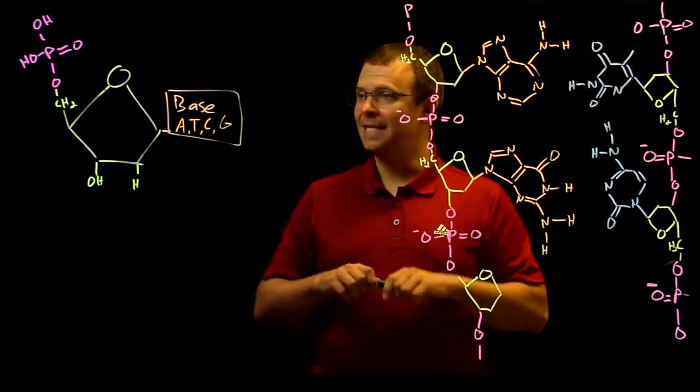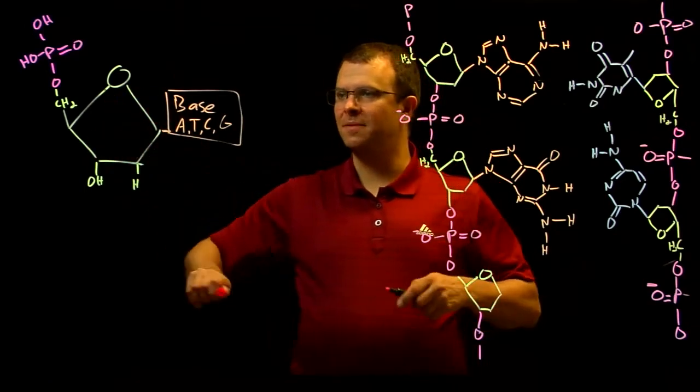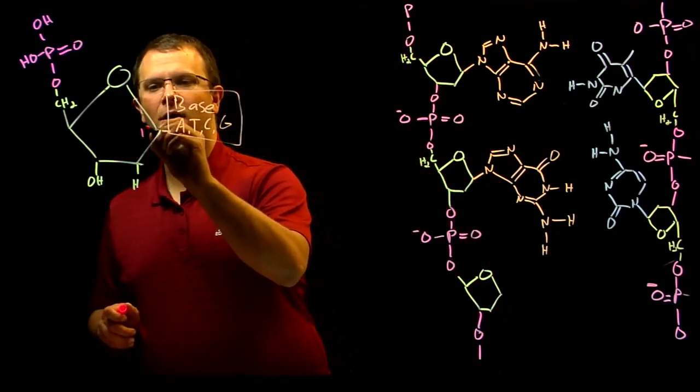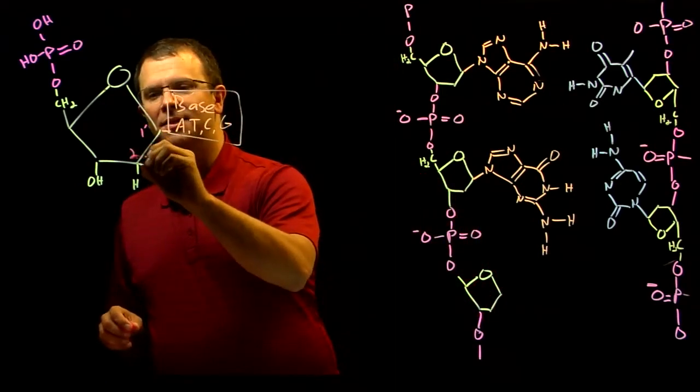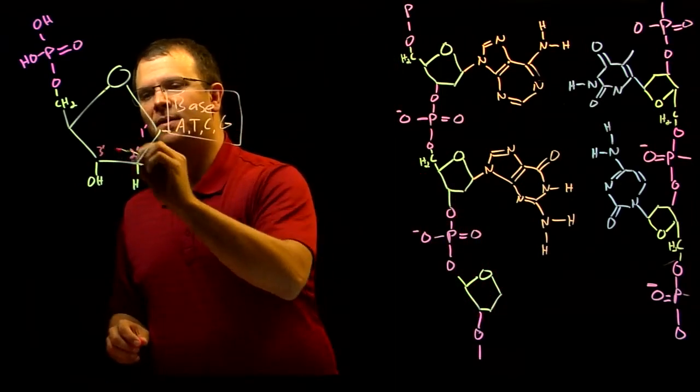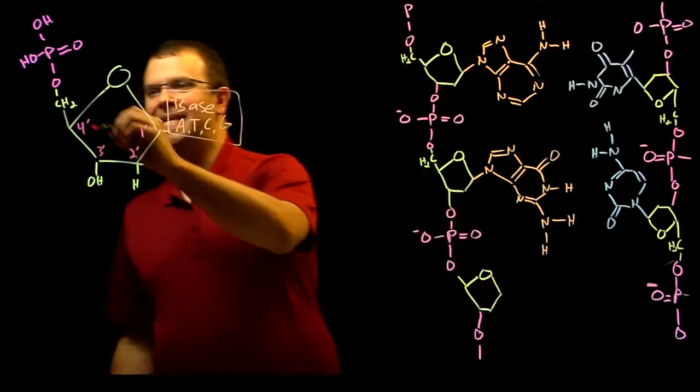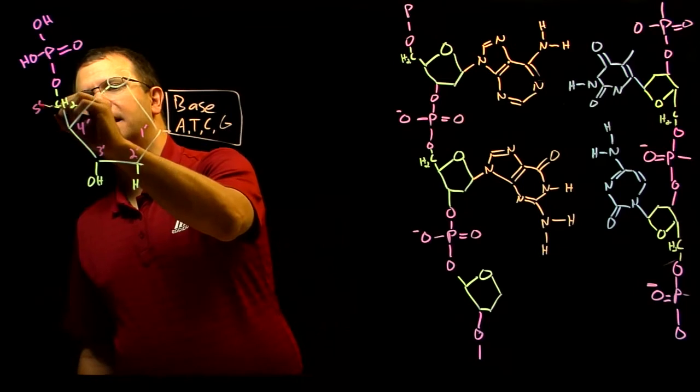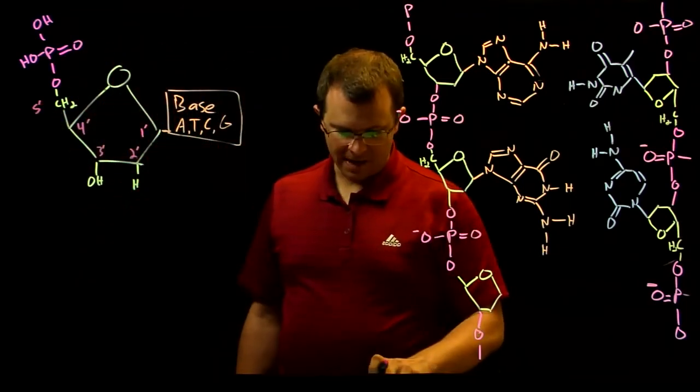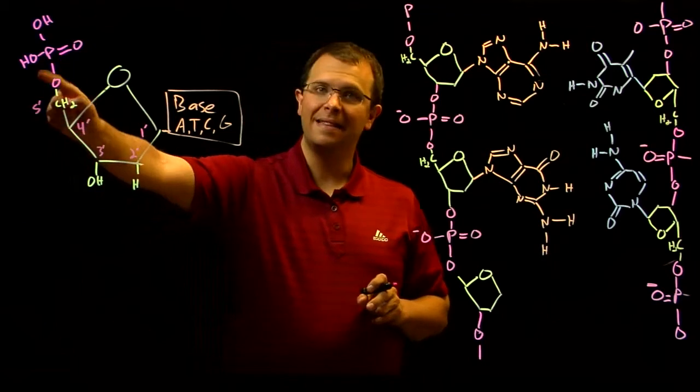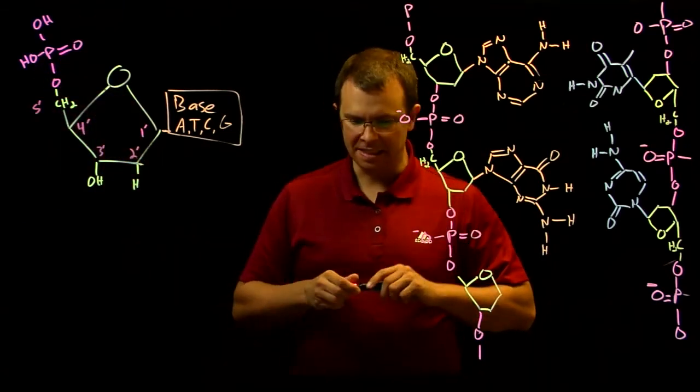Going clockwise from the oxygen, this carbon is the one-prime carbon. This one is two-prime. This one is three. This one is four. And the methyl group that's hanging off here outside of the ring is the five-prime carbon. And it's to the five-prime carbon that the phosphate group is linked.